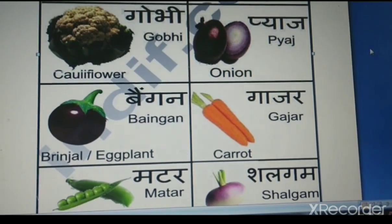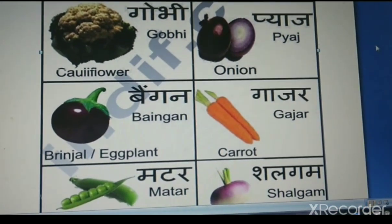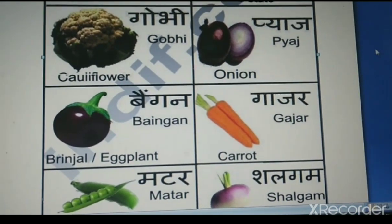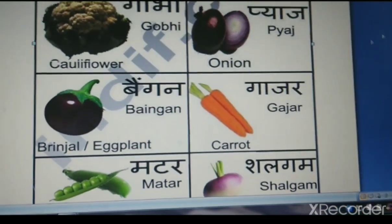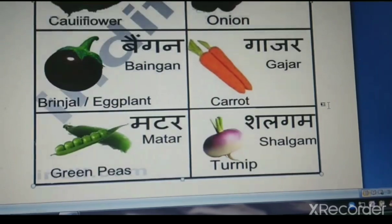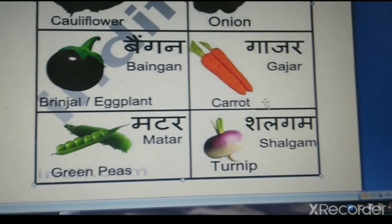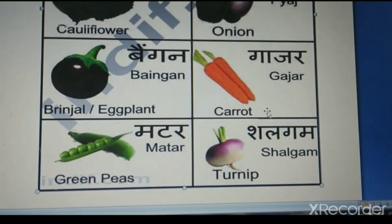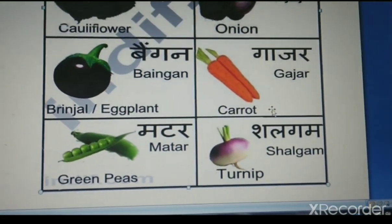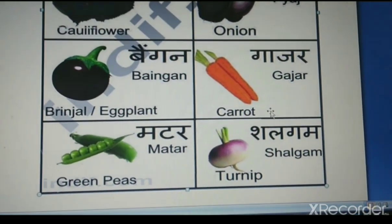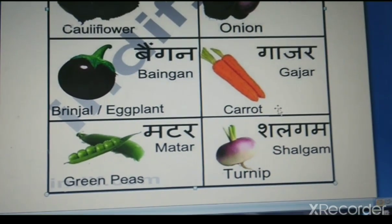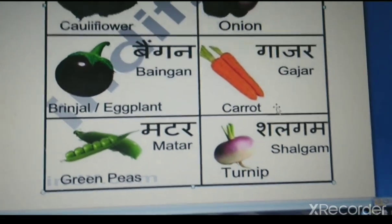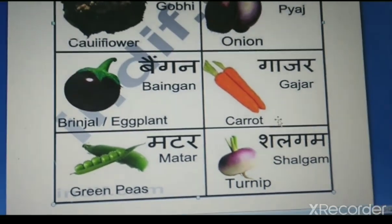Carrot means gajar, green peas means matar, turnip means shalgam. Thank you guys, subscribe for more, bye.